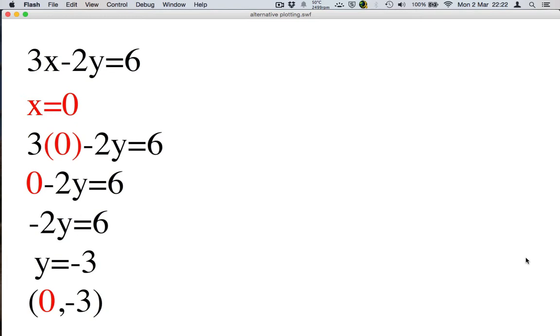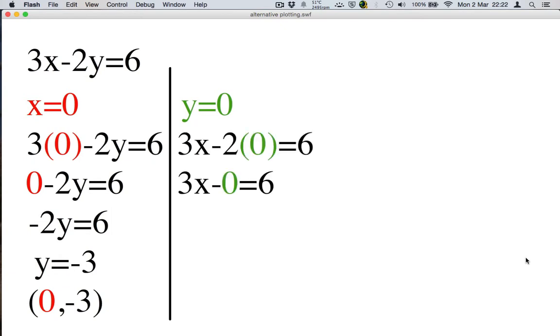Now we need to find our second point to draw. That's when y equals 0. Put that into our formula. 3x minus 2 times 0 equals 6. So 3x minus 0 equals 6. 3x equals 6. And then x equals 2. This gives us the point (2,0). Make sure you get the numbers around the right way.